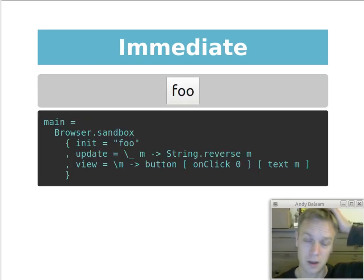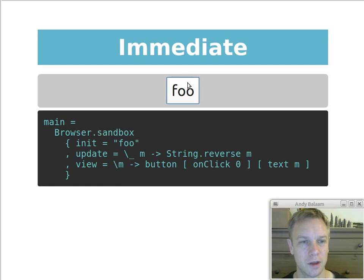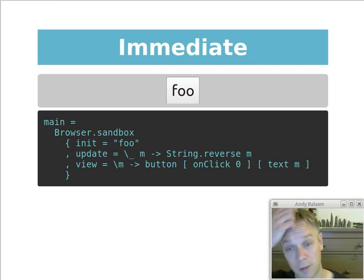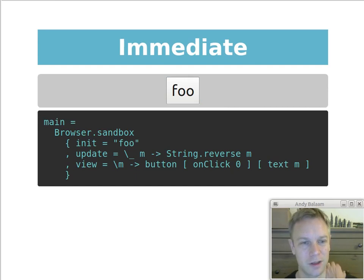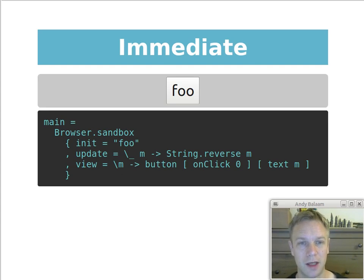So let's start off with 'immediate'. Here's a little Elm program — it's a little button that says 'foo', and when I click on it, it reverses the text on that button. This program here is the whole code of that Elm program except for a couple of imports. It shows you exactly the structure of an Elm program: it has an 'init' that sets up things at the start, an 'update' that gets called whenever something changes, and a 'view' that tells Elm how to display data on the screen. It's built out of a model, which gets created in init, then an update and a view.